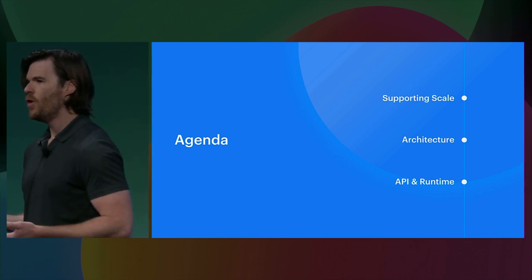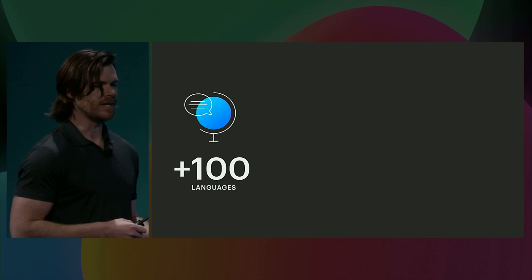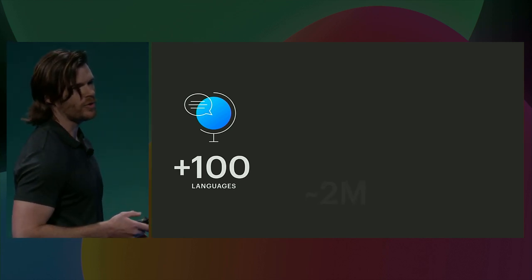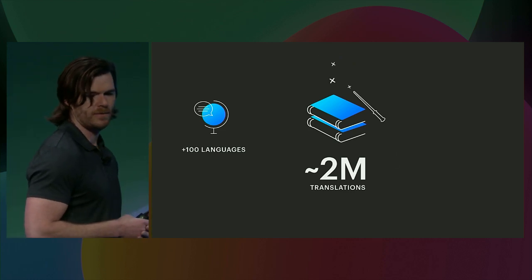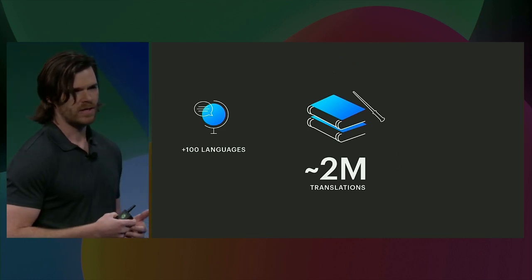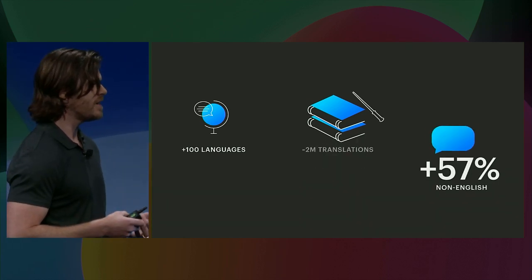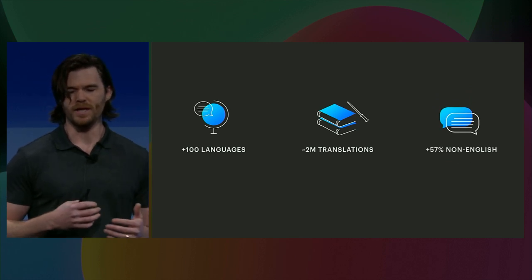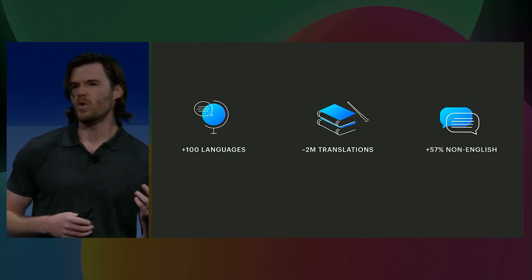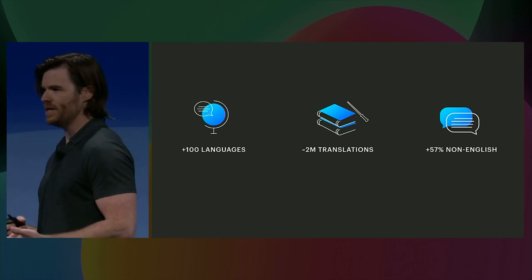So first, why does any of this matter? Facebook itself is available in over 100 languages and dialects. Our translators produce over 2 million translated words every week — an amount equivalent to double the Harry Potter book series. 57% of our users use Facebook in a language other than English, and it's crucial we make their experience just as engaging as the original UI author intended.